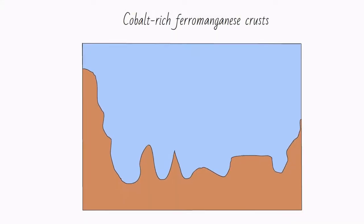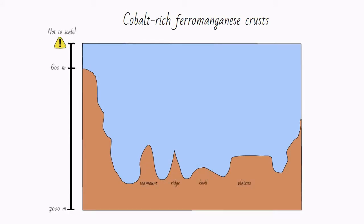Cobalt-rich crusts, more correctly known as cobalt-rich ferro-manganese crusts, are found primarily on seamounts, ridges, knolls, and plateaus at ocean depths of 600 to 7000 meters. The cobalt-rich crusts with cobalt concentrations of economic relevance are found at depths of 800 to 2500 meters.